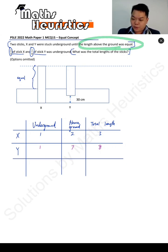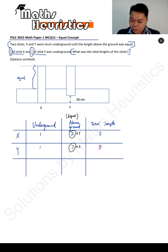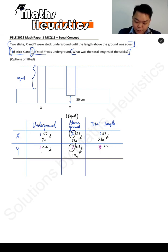We note that the length above ground was equal, so we want to make them the same. If these two are equal, we multiply X's above-ground portion by seven and Y's by two, giving us 14 for both. Convert them all into a single unit — multiply X's row by seven to maintain equivalence, and multiply Y's row by two to maintain equivalence for the bottom row.